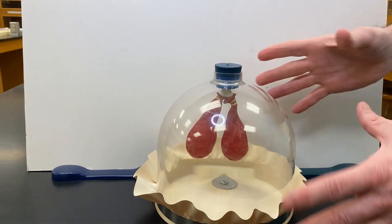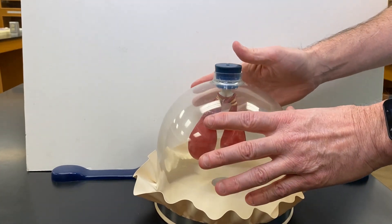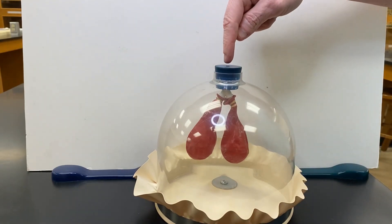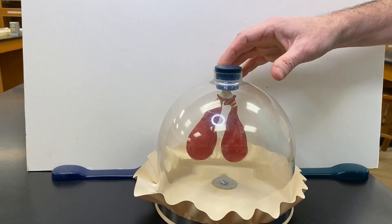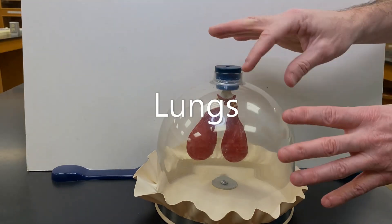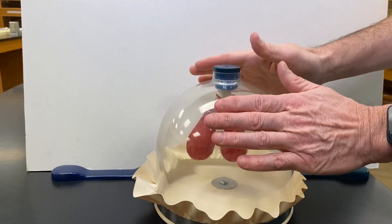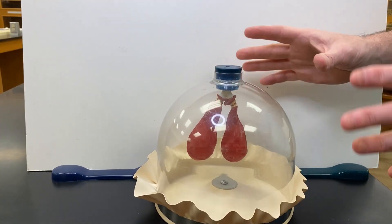This bell jar represents the ribcage, and the opening here would be the trachea. Those bags in there represent the lungs, with the space between the balloon and plastic being the pleural cavity.